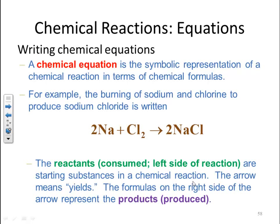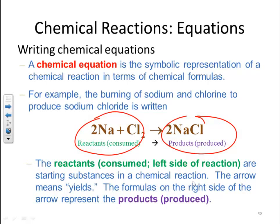The reactants, those species being consumed on the left side of the reaction, are the starting substances in the chemical reaction. Then you have an arrow that means yields, and the formulas on the right side of the arrow represent the products, or what's being produced. So you have your species being consumed to form your species being produced.